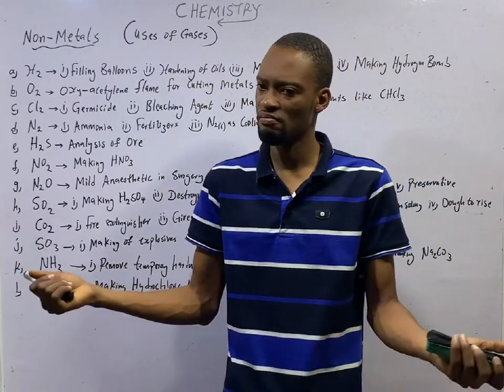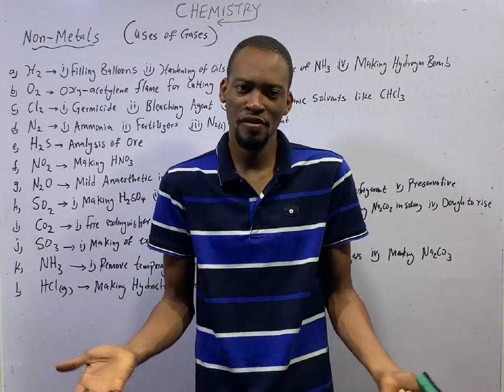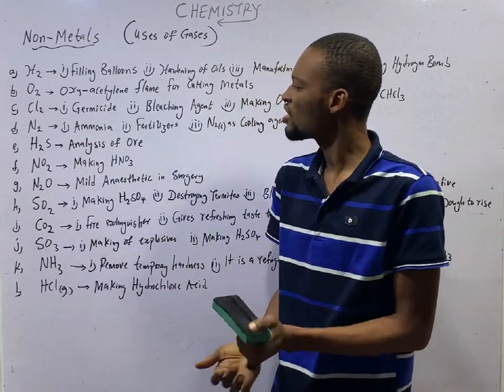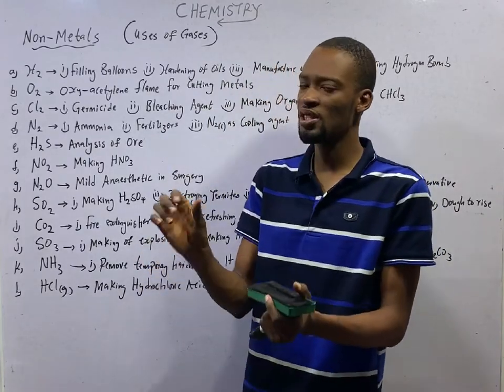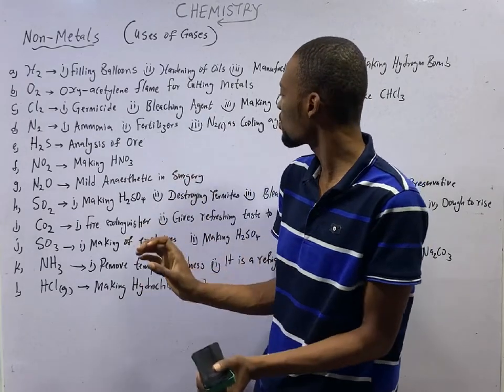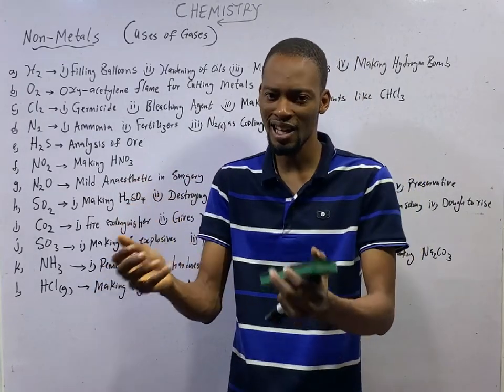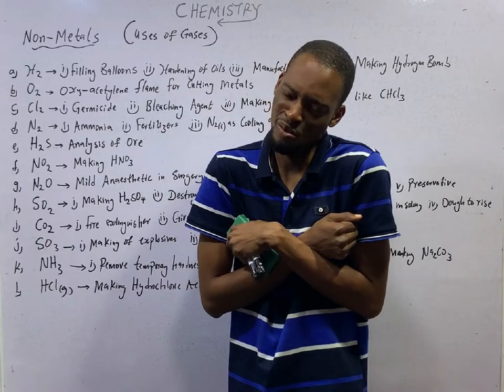Nitrogen gas is used in production of ammonia or manufacture of ammonia. Obviously, it is used in making fertilizers. And liquid nitrogen is used as cooling agents, as coolants, to keep cool.